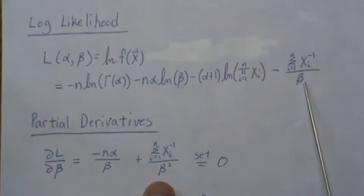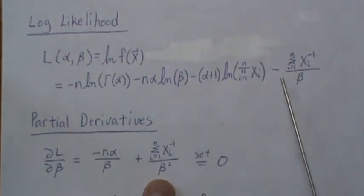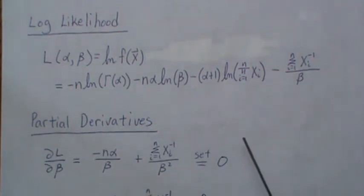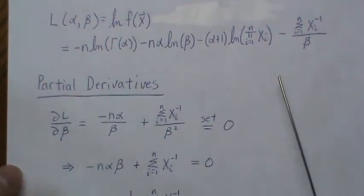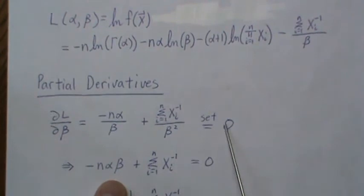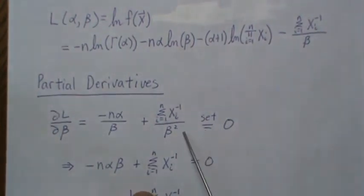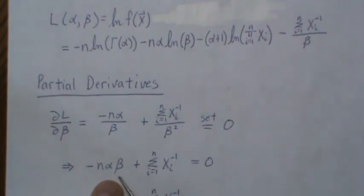So the derivative of this with respect to beta is you get this sum back, the minus goes away, and you get a squared. Now we set it equal to 0 and we solve for beta. So now if we multiply everywhere by beta squared, it cancels there, 0.